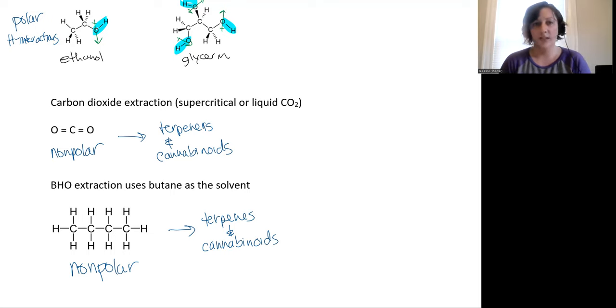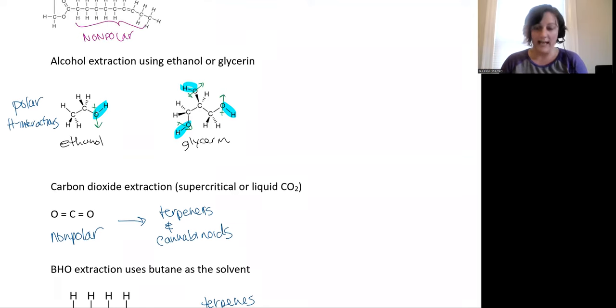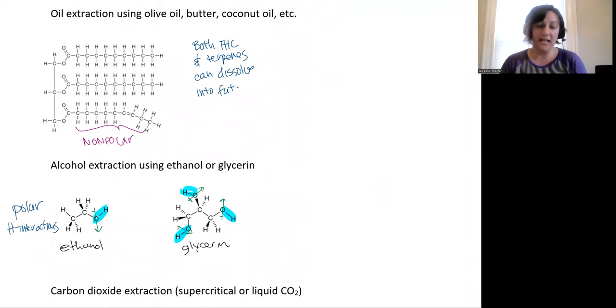And so we'll go into more detail with carbon dioxide extraction and BHO extraction next week. And we'll actually look at those like the extraction processes that happen on an industrial scale. The tincture creation with alcohol and creating extracts into oil, butter, or coconut oil are things that are typically more done in the home kitchen, but also done as a way of processing, especially the oils, cannabis into edibles, or something that you would drop on your tongue with a tincture, something like that.